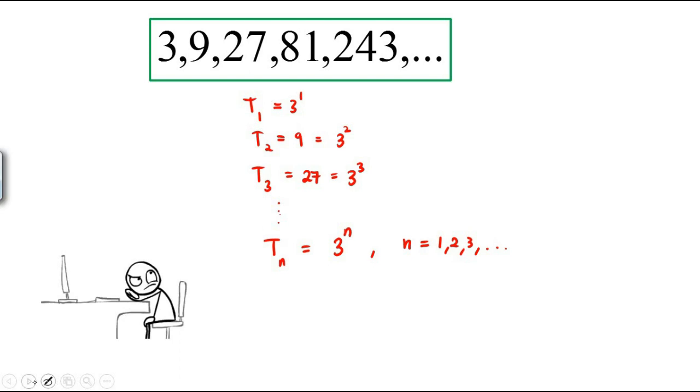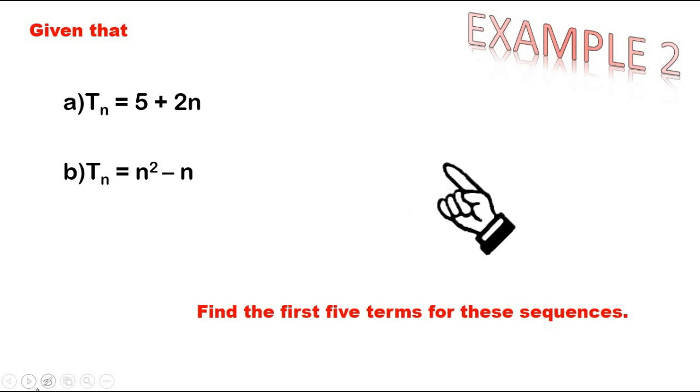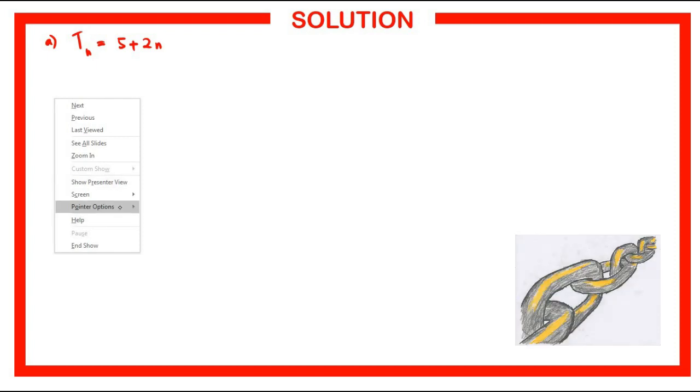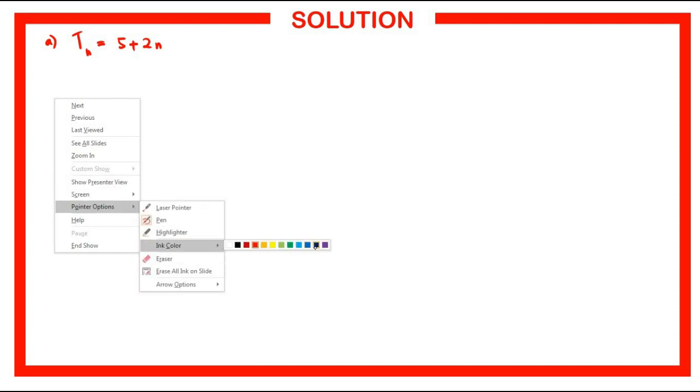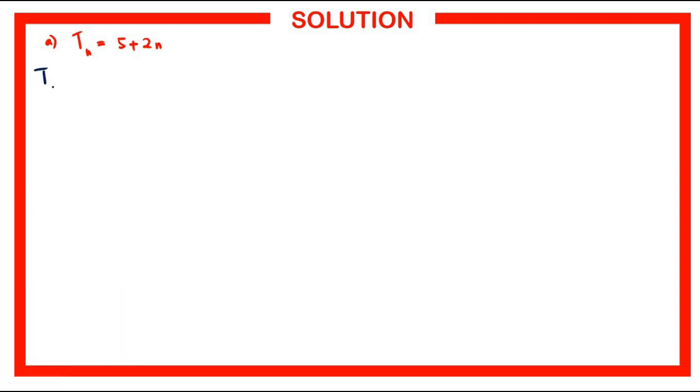Next, Example 2. Given that Tn is 5 plus 2n, and the second one is Tn equals n squared minus n, find the first five terms of the sequences. For the first one, we have Tn equals 5 plus 2n. The question wants you to find the first five terms.